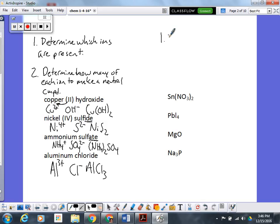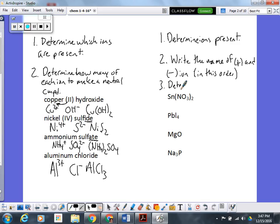So you do have to figure out which ions are present again. Except this time, instead of determining the formula of the ion, you want the name of the ion. Then the next thing you're going to do is you're going to write the name of the positive ion and negative ion in that order. And then for some of them, we'll have to figure out if there's a Roman numeral. So three, determine if you need a Roman numeral.